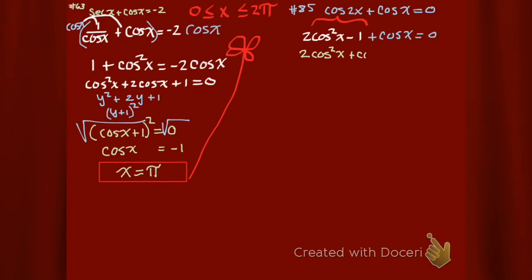If you can dodge a wrench, you can dodge a ball. If you can factor 2y squared plus y minus 1, then you can factor 2 cosine squared x plus cosine x minus 1. How does that factor? That's 2y minus 1 times y plus 1. If you don't believe me, check it! You can multiply that out.